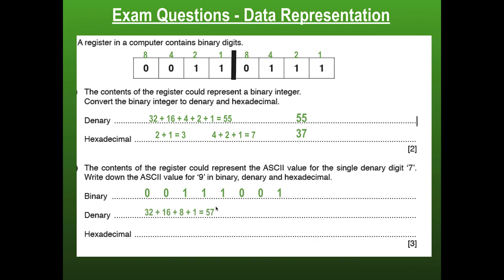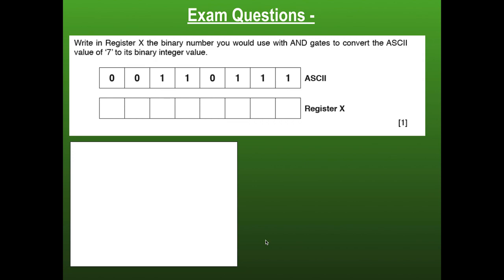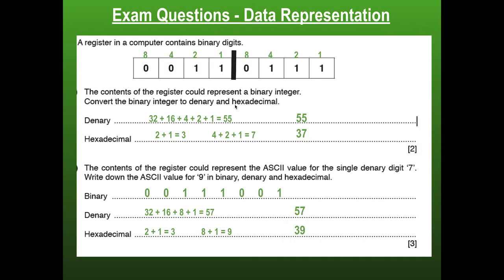What's the denary value? You can add them up individually, or you could also just add two onto 55 to give you 57. For hexadecimal, you could do the same — add two to the 7 to get 39 instead of 37. Equally you can work it out: the first nibble is 3 and the second nibble is 8 plus 1 equals 9. Now here's a more complicated question: write in register X the binary number you would use with AND gates to convert the ASCII value of 7 to its binary integer value. We covered that these bits are the ASCII representation and this was a 7, so if we want just the binary integer value of 7, we only want those lower bits.